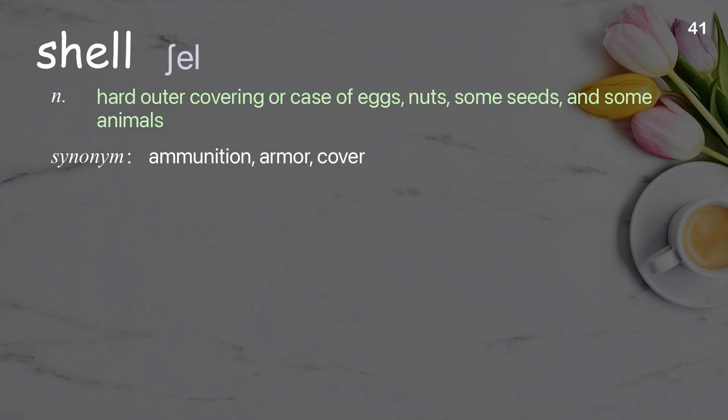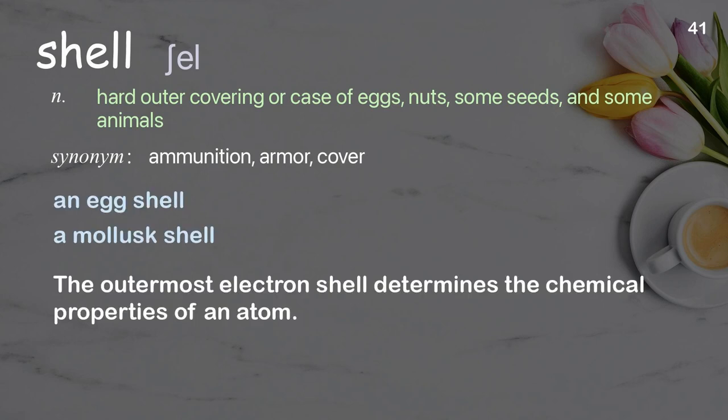Shell. Hard outer covering or case of eggs, nuts, some seeds, and some animals. Examples: an egg shell, a mollusk shell. Sentence: The outermost electron shell determines the chemical properties of an atom.